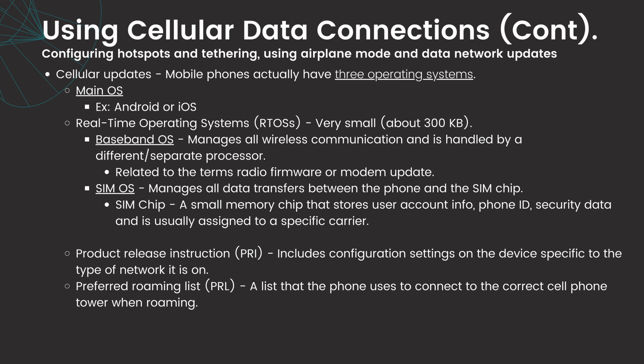The SIM OS manages all data transfers between the phone and the SIM chip. The SIM chip is a small memory chip that stores user account info, phone IDs, and security data, and is usually assigned to a specific carrier. Product Release Instructions or PRIs include configuration settings on the device specific to the type of network it is on. The preferred roaming list or PRL is a list that a phone uses to connect to the correct cell tower when roaming.